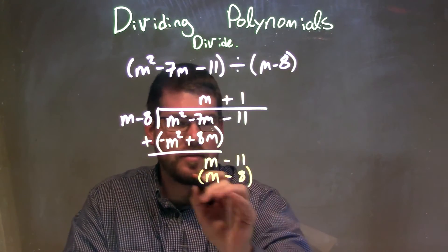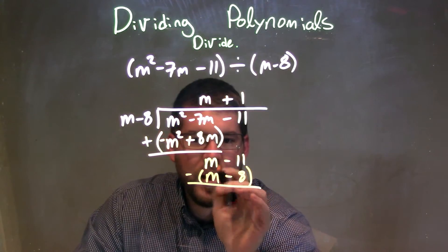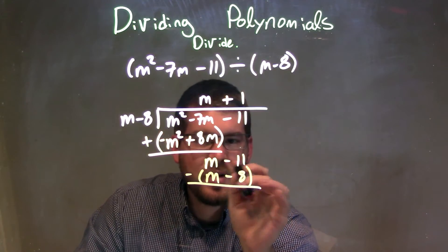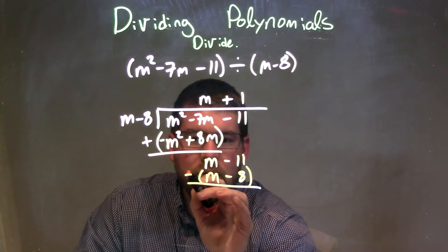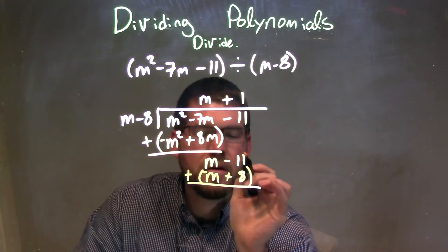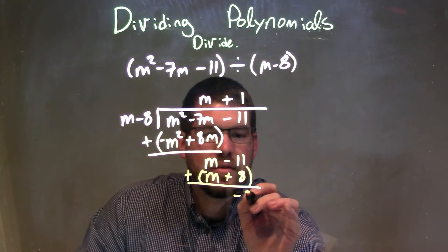Remember, we're subtracting these. m minus m is just 0, and minus 11 minus a negative 8, so that minus sign we distribute. We have negative 11 plus 8, which is minus 3.